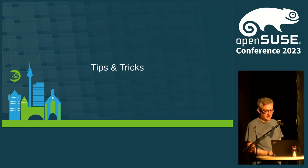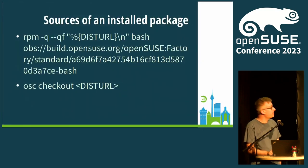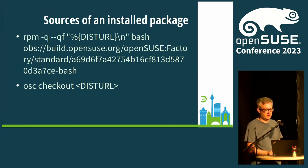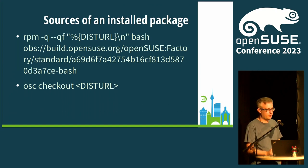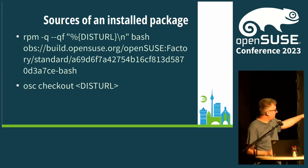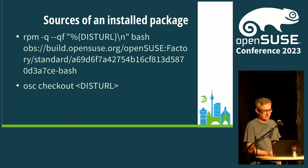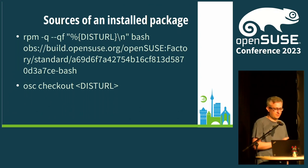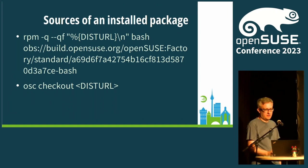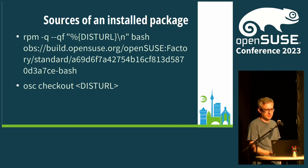Now we're getting to the tips and tricks. I'll start with something I learned quite recently and found super useful. If you have an installed package on your system and want to see its sources, use RPM with --qf (query format) and display the dist-url field from the package. That prints the obs:// dist URL. When you paste it to the OSC checkout command, it checks out the exact version of the sources for the package installed on your system — so in case you need to be troubleshooting something, this is the way to go.